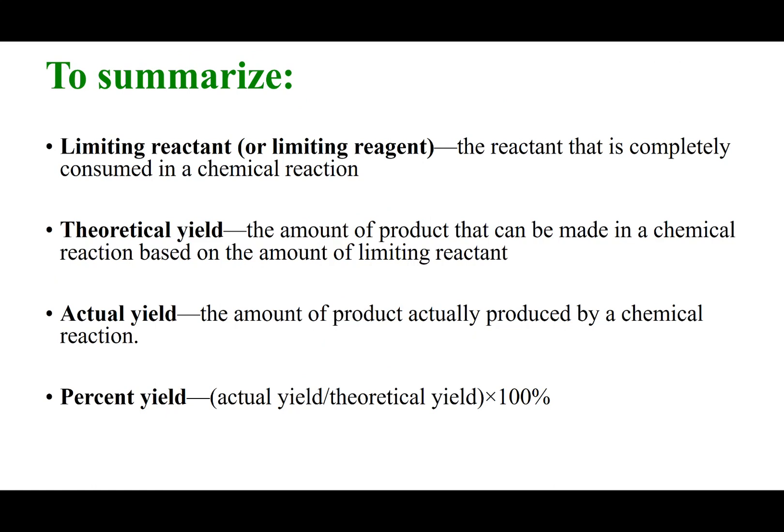To summarize, a limiting reactant is the reactant that is completely consumed in a chemical reaction. Theoretical yield is the maximum amount of product that can be made based on the amount of limiting reactant. Actual yield is the amount of product actually produced by a chemical reaction. Percent yield equals actual yield divided by theoretical yield times 100%.